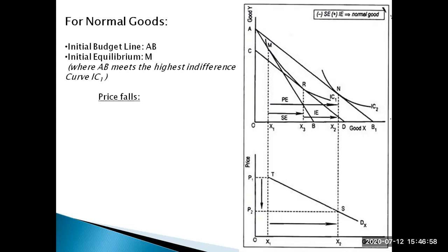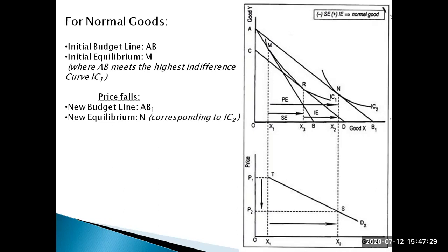Now suppose there is a drop in the price of good X, meaning the affordability of good X has increased. In that case, the budget line AB pivots around point A and rotates rightward to form the new budget line AB1. With this change in the budget line, the new equilibrium is at point N, which corresponds to the highest indifference curve IC2. So when the price falls, the individual increases consumption, moving from point M to point N.